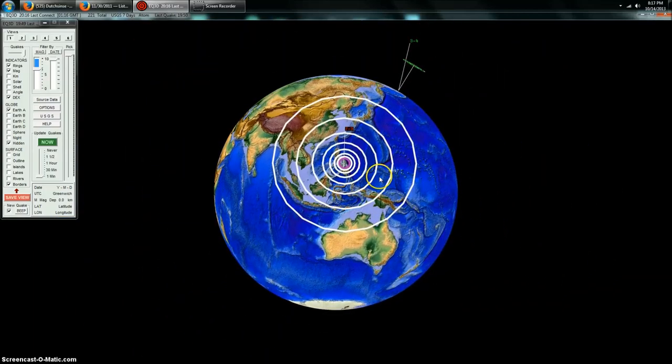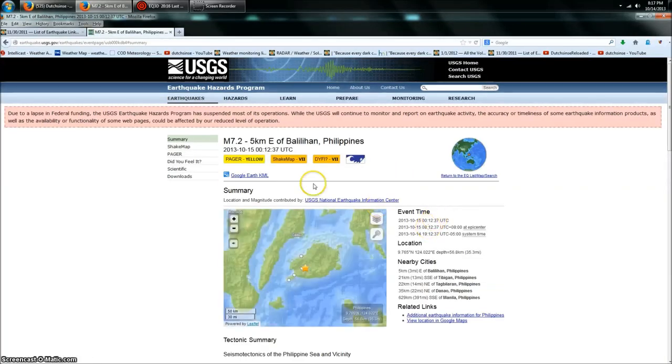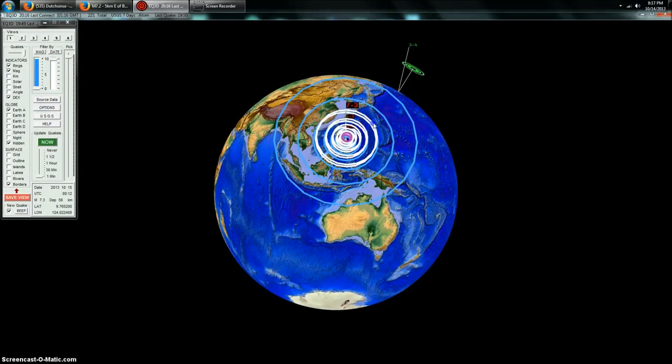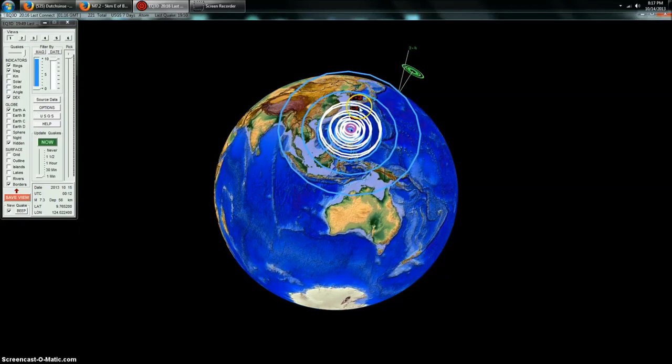You can see a 7.3 magnitude earthquake struck in the Philippines. It was relatively shallow at 35 miles deep, which is very sizable for the region. No tsunami warning was issued, luckily, but it's significant. Subsequent aftershocks since the 7.3 include 5.3 and 5.4.